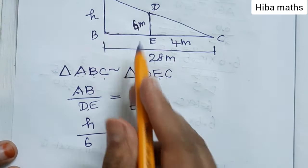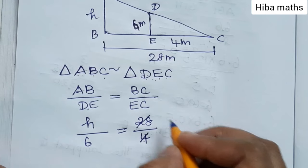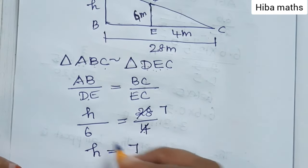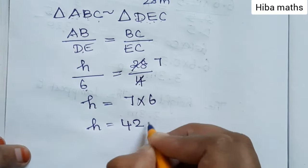So 4 goes into 28 seven times. Therefore h equals 7 times 6. 7 times 6 equals 42. So 42 meters is the height of the tower.